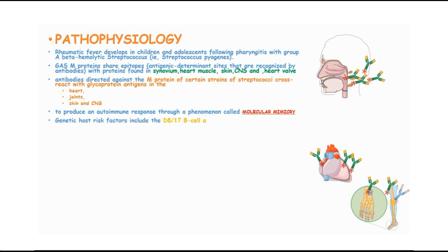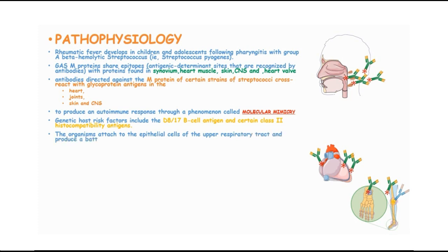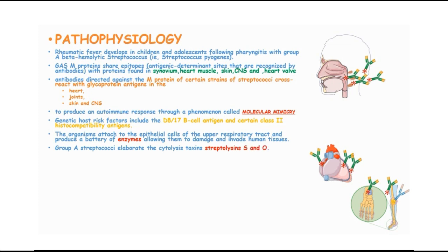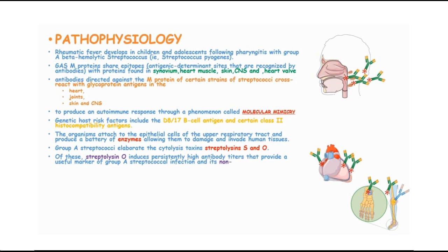Genetic host risk factors include the D8-17 B cell antigen and class II histocompatibility antigens. The organisms attach to the epithelial cells of the upper respiratory tract and produce a battery of enzymes allowing them to damage and invade human tissues. Group A streptococcal elaborates the cytolytic toxins streptolysin-S and streptolysin-O, and of these streptolysin-O induces persistently high antibody titers which provide a useful marker of group A streptococcal infection and its non-suppurative complications.